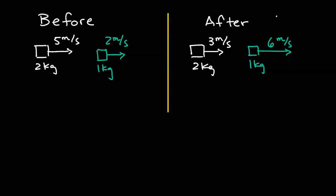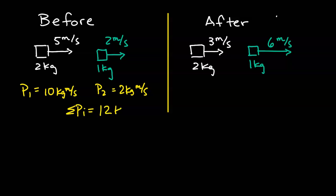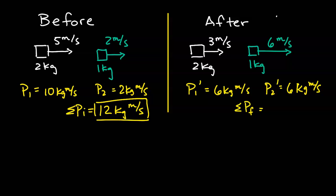First, we're going to calculate the total momentum before and after the collision. Before the collision, object 1 has a momentum of 10 kilograms meters per second — we get the momentum by taking mass times velocity: 2 times 5 gives us 10. Object 2 has a momentum of 2 kilograms meters per second. The net initial momentum is 10 plus 2, which is 12 kilograms meters per second. After the collision, object 1 has a momentum of 6 kilograms meters per second, and object 2 also has a momentum of 6 kilograms meters per second, giving us 12 kilograms meters per second total. The total momentum is conserved, as expected for an isolated system.